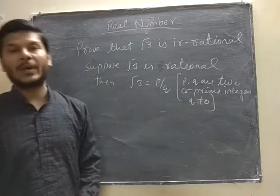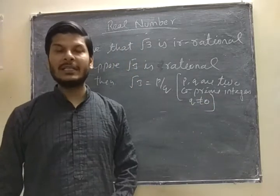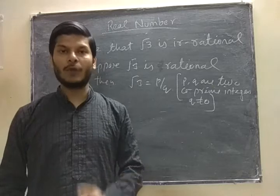Co-primes are two numbers which have only one common factor, and that is 1.